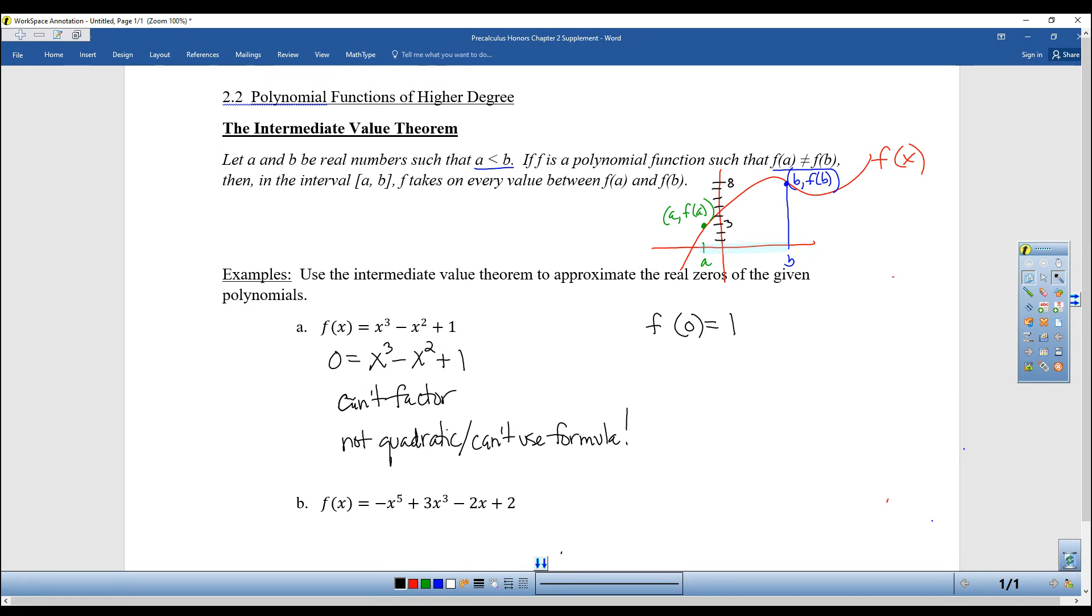F of zero is equal to 1. So at zero, I know it's 1. F of 1 is equal to 1 minus 1 plus 1, still 1. That wasn't very helpful, because they're the same height. F of 2 is 8 minus 4 plus 1 is 5. 1, 2, 3, 4, 5. So it's way up there.